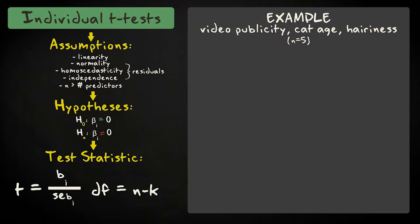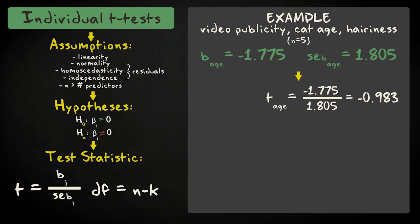Suppose that, in our example, the regression coefficient for cat age equals minus 1.775, and the standard error is 1.805. Then the t-value equals minus 0.983.